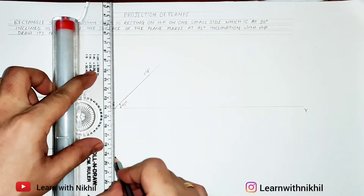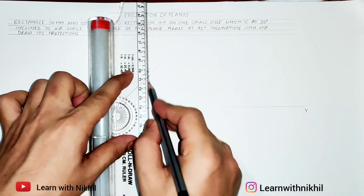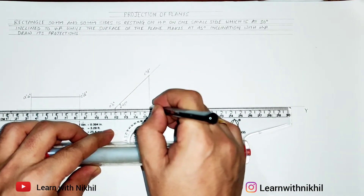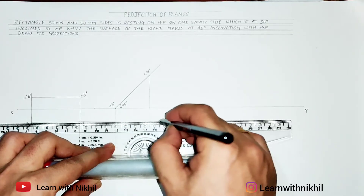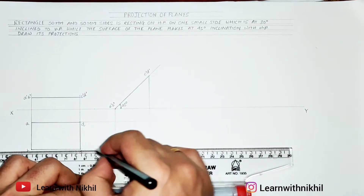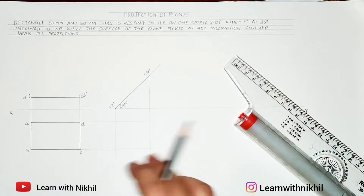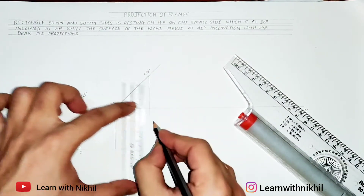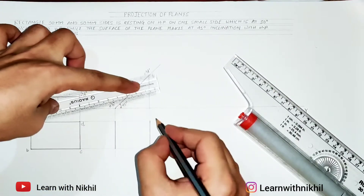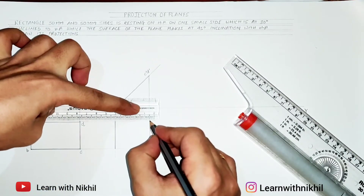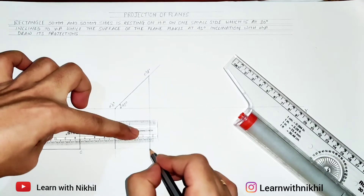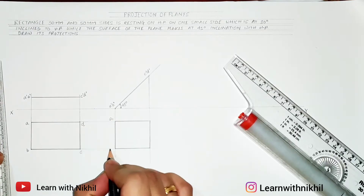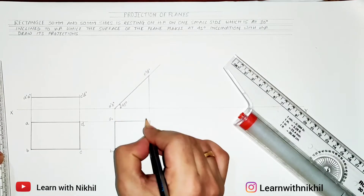Now I'll take the projections downward from the front view to the top view. Taking these end projections down, we'll get the inclination in the top view. Taking this projection here, this will give me the inclination in the top view. Now you can draw the rectangle — as you can see, the rectangle width has decreased because of the inclination angle. I'll mark this as a1, b1, c1, and d1.